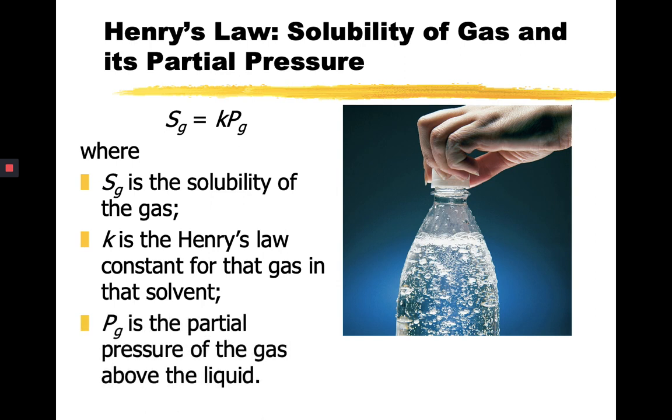And then we can actually express this in terms of Henry's law, which relates the solubility of a gas to its partial pressure. So when you say partial pressure, that is the pressure of a gas as if it were alone in a system. So in here, we have SG, which is the solubility of the gas, is equal to K, which is our constant, Henry's law, Henry's constant, or Henry's law constant, which is specific for a particular gas solute and liquid solvent pairing. And then PG is the partial pressure of the gas above the liquid.